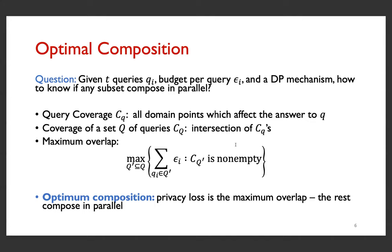Likewise, we can define the coverage of a set of queries as the intersection of the individual coverages. The maximum overlap is then the maximum budget consumption by any subset of queries that overlap. Optimal composition would then be related to the maximum overlap in the sense that the privacy loss would be exactly the maximum overlap, and the rest of the queries will be composing in parallel.